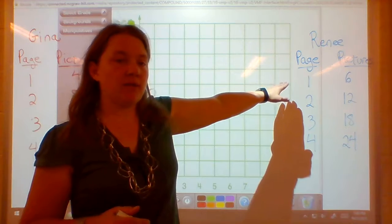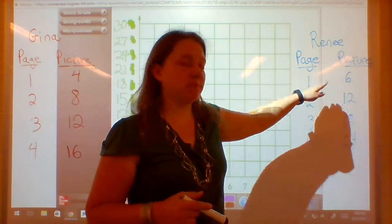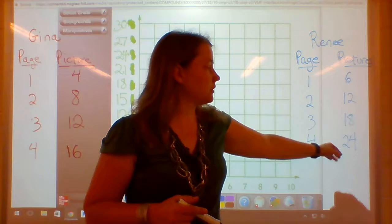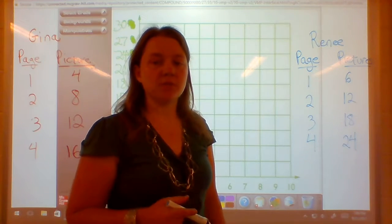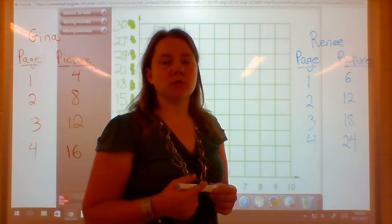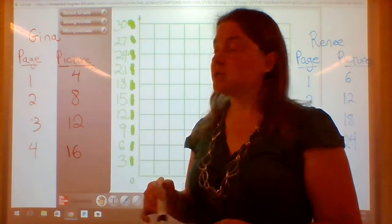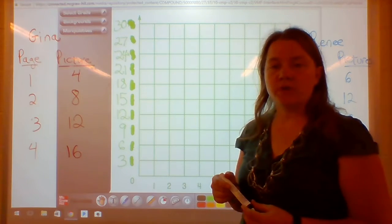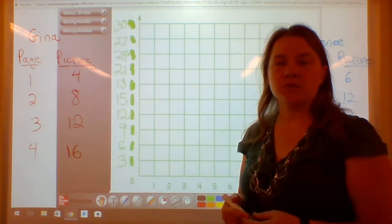Renee, on the other hand, has a scrapbook that fits 6 pictures a page. So when she gets down to page 4, she'll have 24 pictures. What we're going to do is we're going to graph both of these up on the board so that we can see how these two compare.